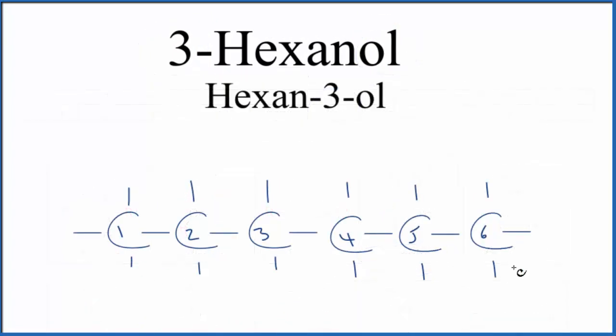So here are our six carbons. We've numbered them. Right now, this is just hexane. So on the third carbon, this one right here, we're going to put that alcohol group, that OH. Let's put it up top. So this is the structure for 3-hexanol, also called hexane 3-ol.